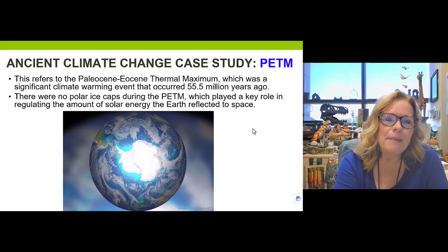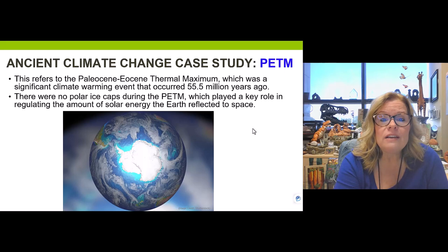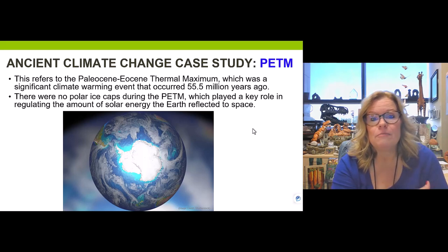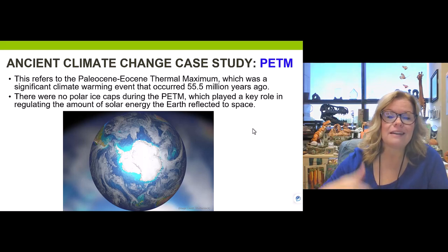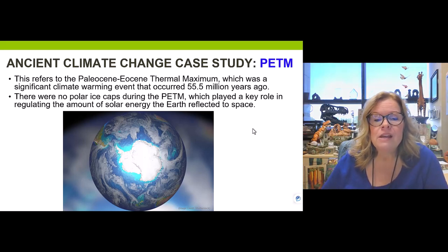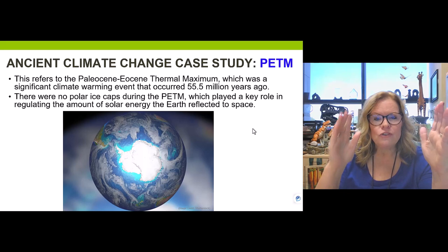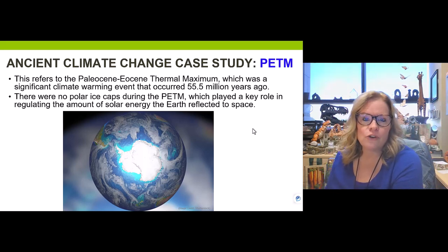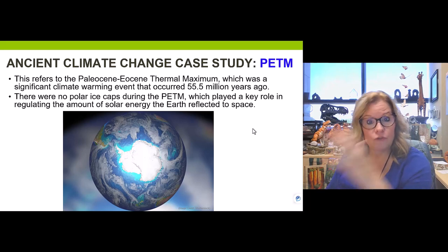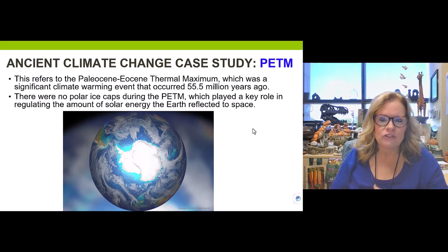Ice packs help reflect some heat back to space — they have a negative albedo effect. Negative here doesn't mean bad; it means a cooling of temperature, while a positive forcing represents an increase in temperature. When you don't have ice packs and other lighter-colored surfaces on the planet, more radiation is absorbed, which accelerates the rate of climate change. This is critically important to the modern-day Holocene extinction story.